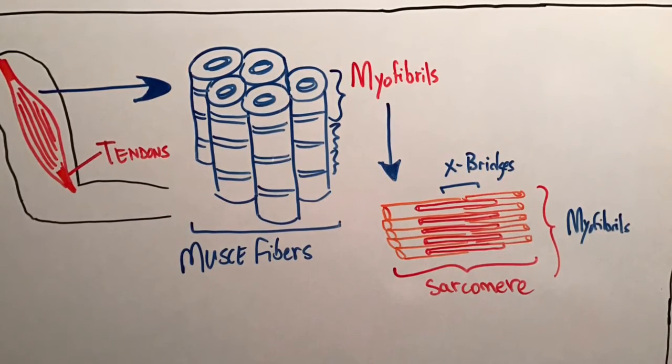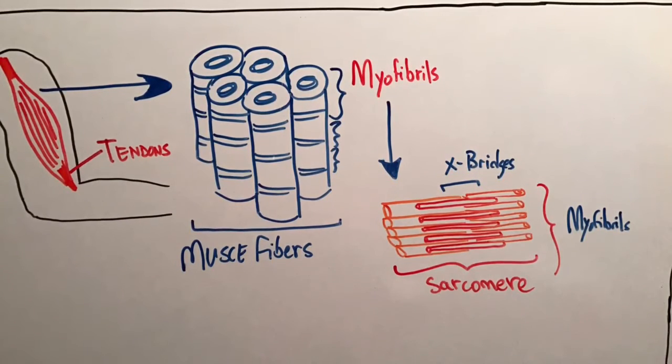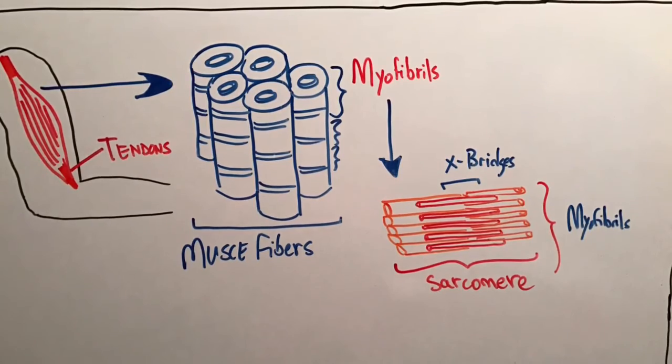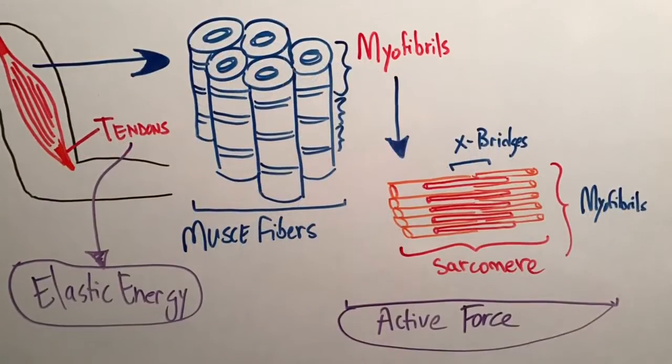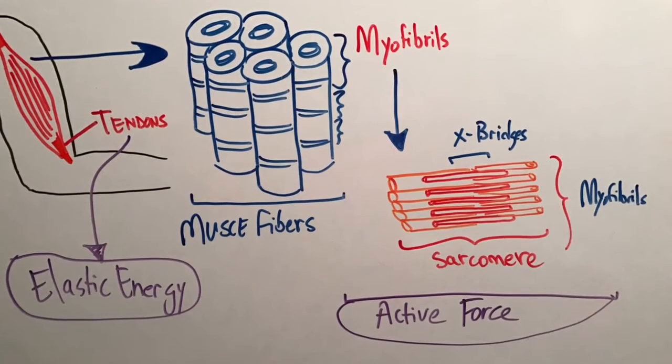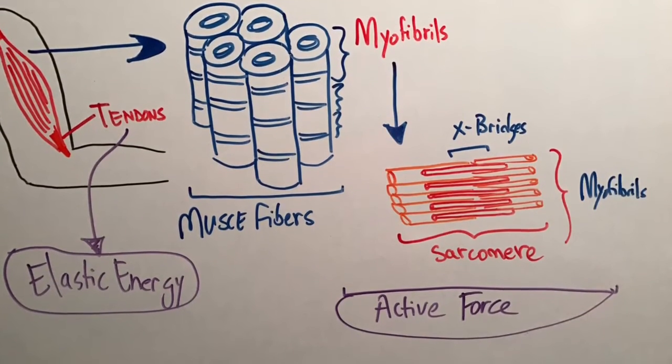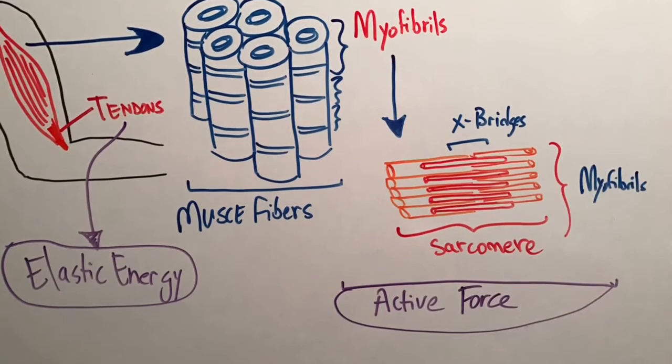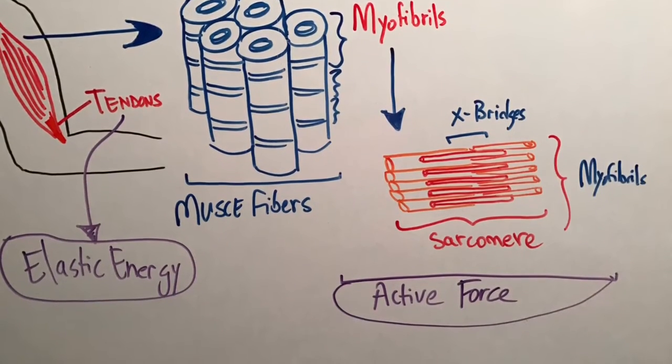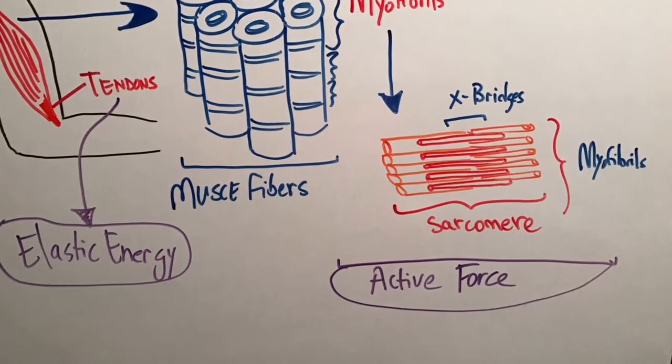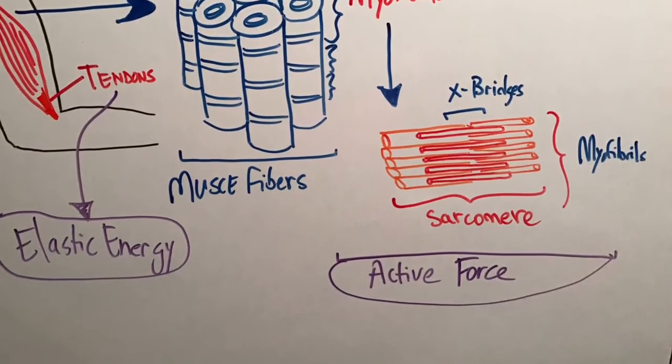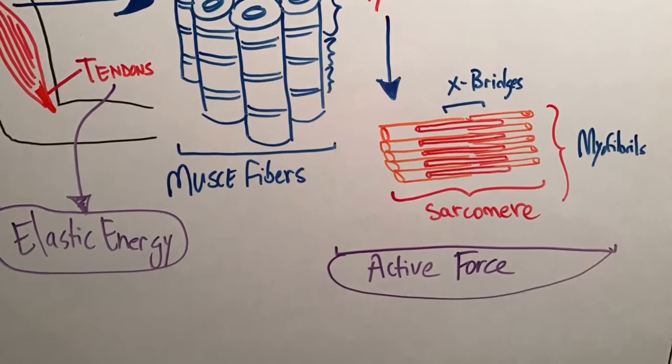These cross bridges are responsible for the muscle's active force generation. The muscle fibers attach themselves to tendons that can stretch in order to store elastic energy during a contraction. This passively stored energy is independent of the active muscle force generated from motor neuronal excitation.